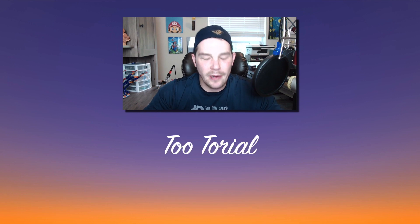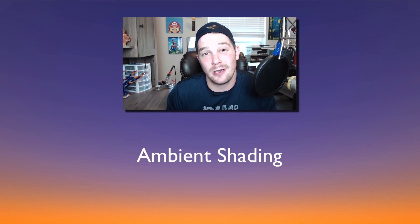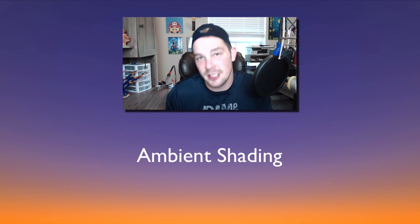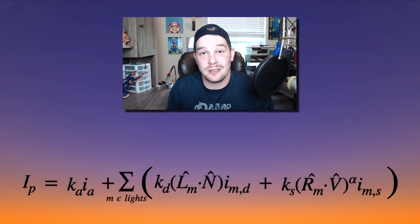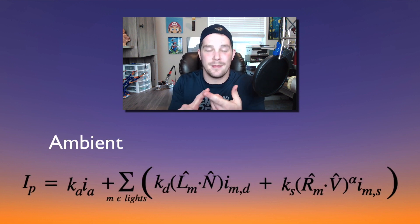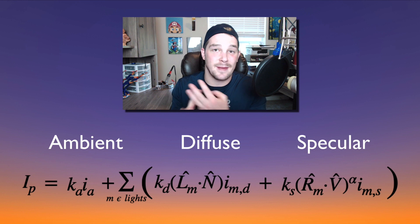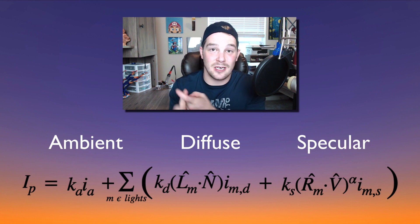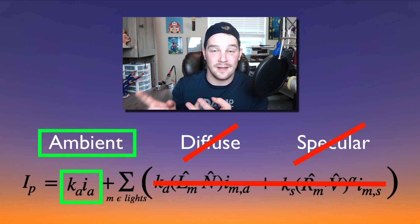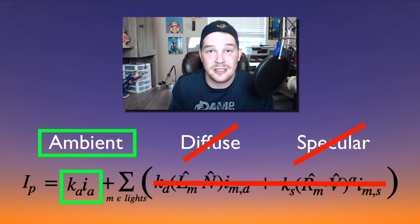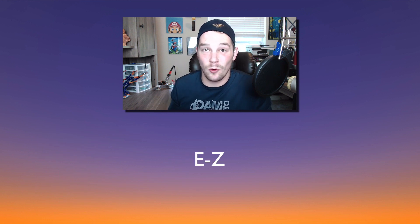Hello world, welcome back to another tutorial. Today we're going to be talking about how to implement ambient shading into our Metal Shading Language engine. In the last episode we talked about Phong shading and how it's made up of ambient, diffuse, and specular lighting. This episode is just going to cover ambient, and then we'll do diffuse and specular in another episode. If you know anything about the Phong shading formula, ambient is the easiest part to implement.